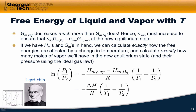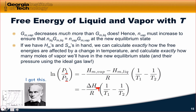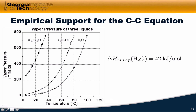The Clausius-Clapeyron equation states that the natural log of P1 over P2 — the natural log of the pressure in state 1 divided by the pressure in state 2 — is equal to delta H of vaporization divided by R, times the quantity (1/T1 minus 1/T2). This is a pretty useful equation because, provided we know the vapor pressure at one temperature and the delta H of vaporization, we can calculate the vapor pressure at any other temperature. We can also measure the vapor pressure at T1 and T2, and from that calculate the delta H of vaporization.